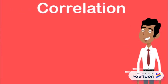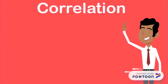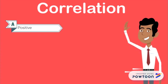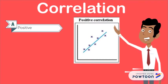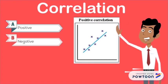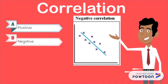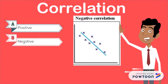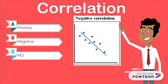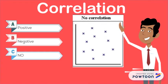Correlation. There are three correlations: positive correlation, where the points increase in a linear pattern; negative correlation, where the points decrease in a linear pattern; and no correlation, where there is no linear pattern.